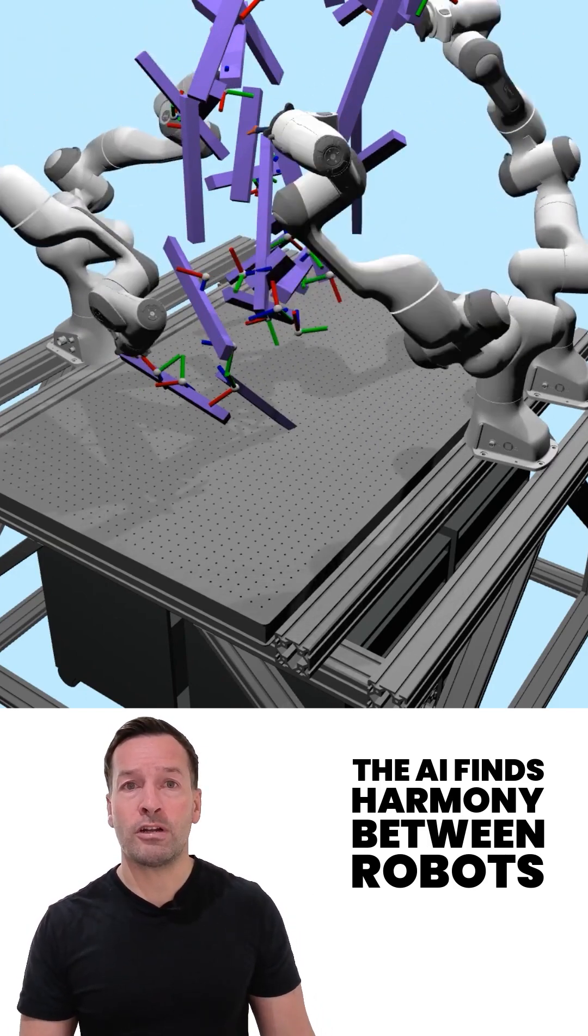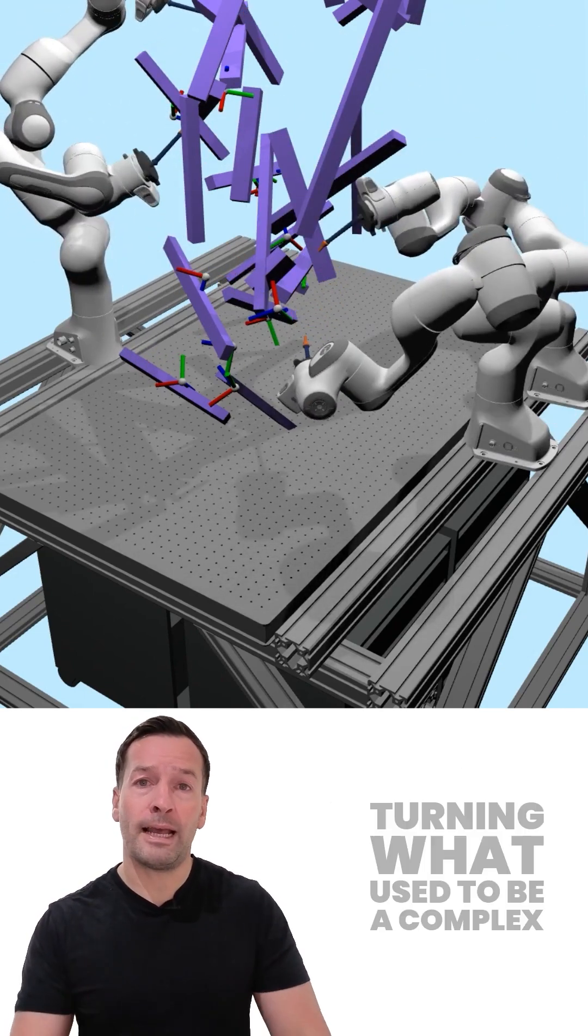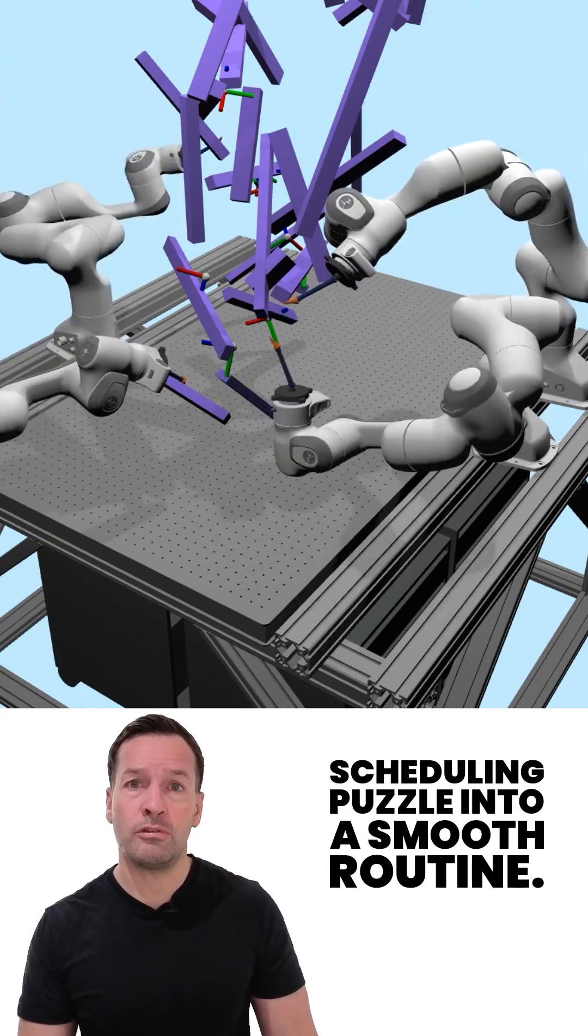The name comes from its choreograph-like approach. The AI finds harmony between robots' timing, space and flow, turning what used to be a complex scheduling puzzle into a smooth routine.